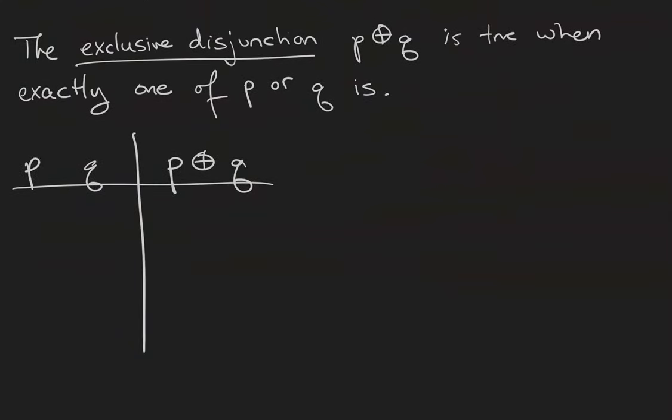Finally, the exclusive disjunction, which we're not going to use a lot in our videos, but is important in computer science, electrical engineering, and stuff like that, is the statement P X-or Q, which is the statement that is true when exactly one of the disjuncts P or Q is. This time, the row where P and Q are both true is going to give us a false statement, because the statement is only true when exactly one of its disjuncts is. It's going to be true in the second and third rows, and false in the fourth row.